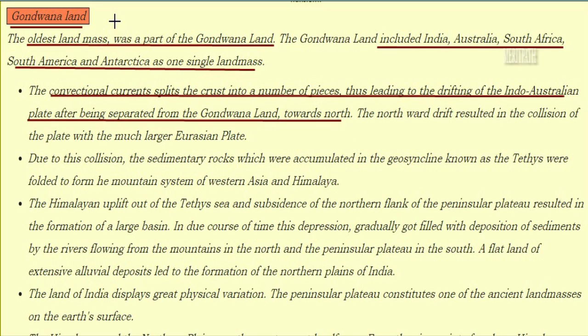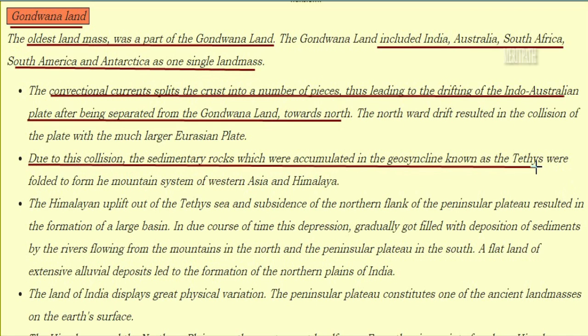Gondwana land: the oldest landmass was a part of the Gondwana land. It includes India, Australia, South Africa, South America, and Antarctica as a single landmass. Conventional currents split the crust into a number of pieces, leading to the drifting of the Indo-Australian plate. After being separated from Gondwana land, its northward drift resulted in collision with the much larger Eurasian plate.